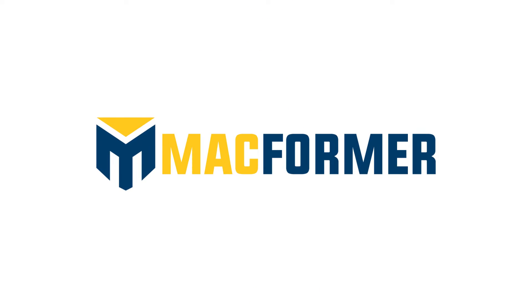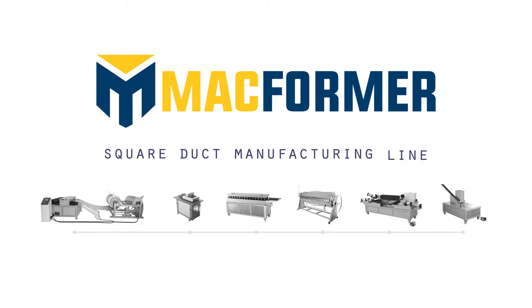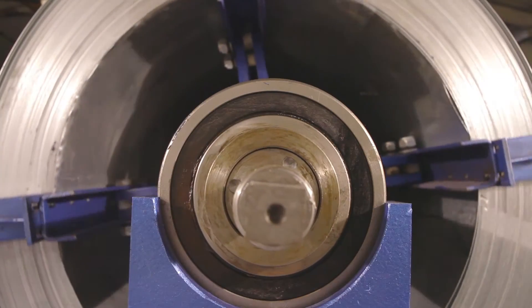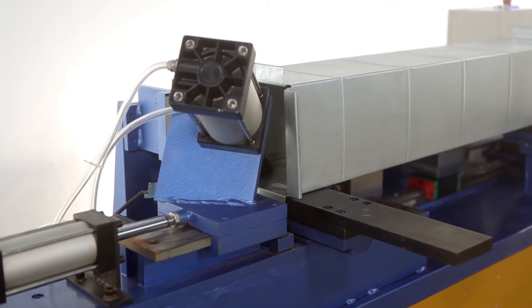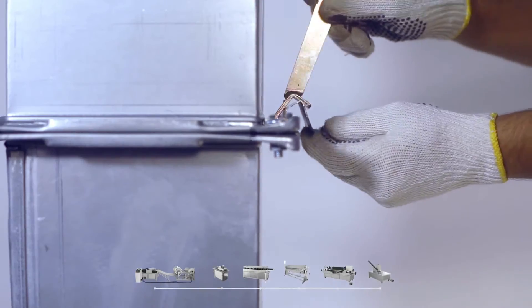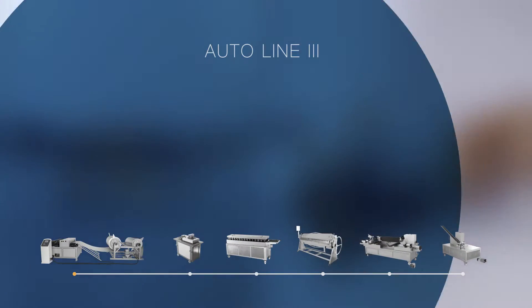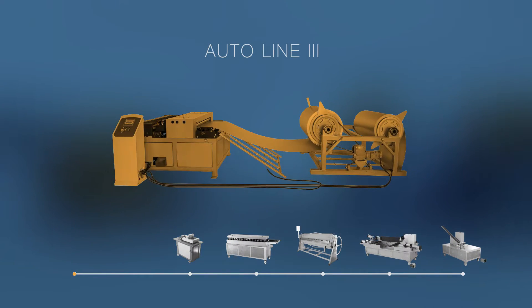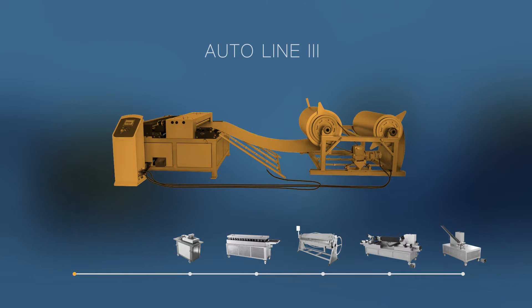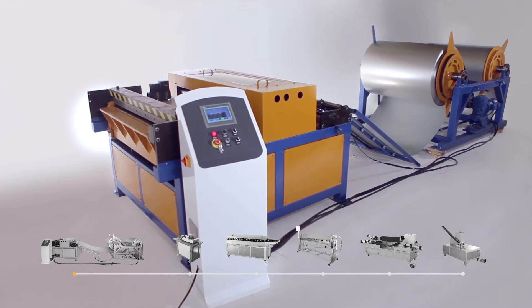Macformer offers its clients a full line of machinery to optimize and give agility to the square duct manufacturing from the sheet metal uncoil until the final production closure and angulation. Learn more.